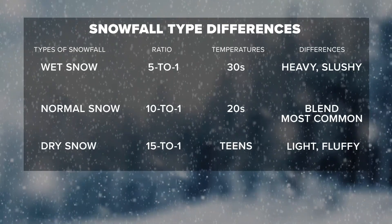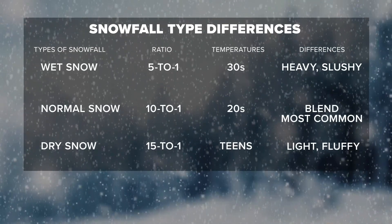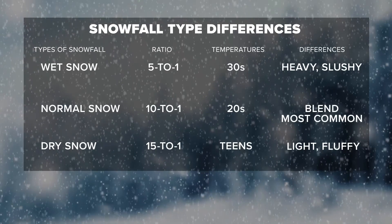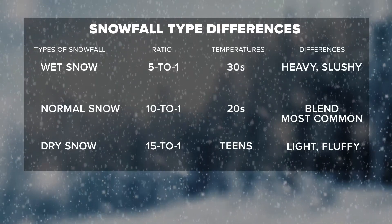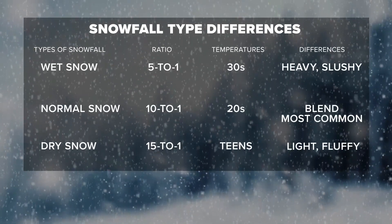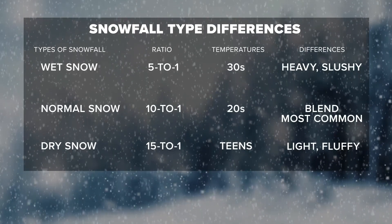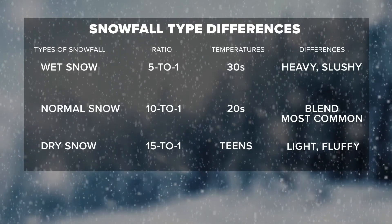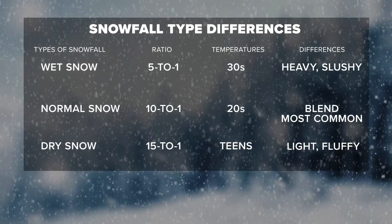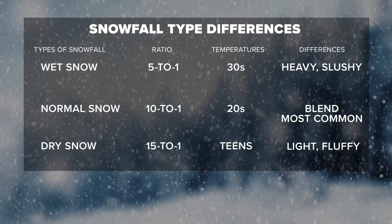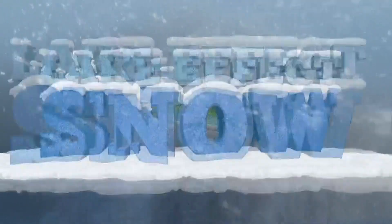Normal snow could have a 10-to-1 ratio, which would be your average between the wettest and the driest snow. It's most common in the middle of winter with temperatures in the 20s. Dry snow is fluffier — it has a higher snow-to-liquid ratio such as 15-to-1 or 25-to-1.